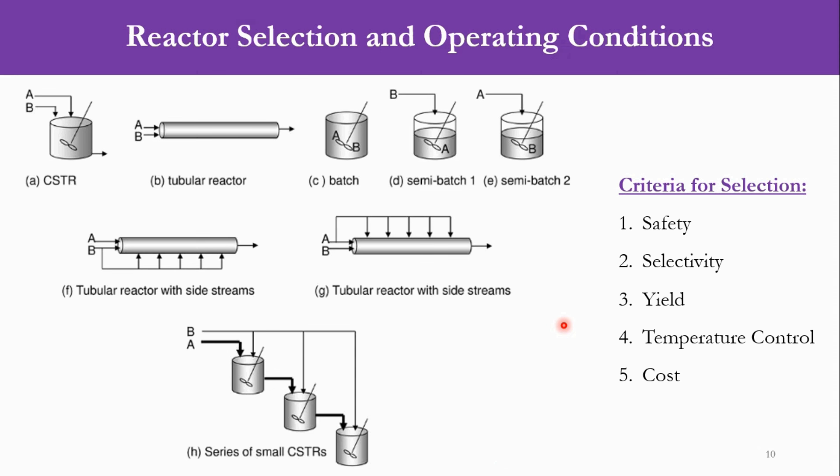Now what are the criteria for the selection of the reactor? There are five different criteria which we have to keep in mind. Number one is safety, then selectivity, then yield, temperature control, and finally the cost. This is not a sequence. There are five criteria which we have to follow while selecting the reactor.